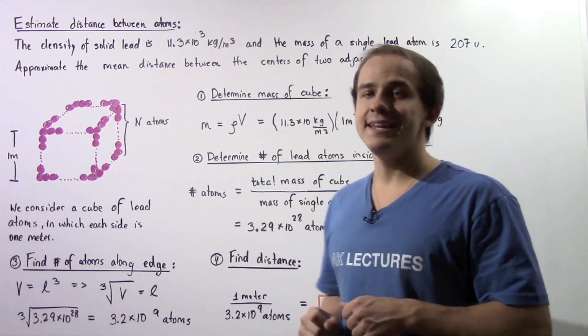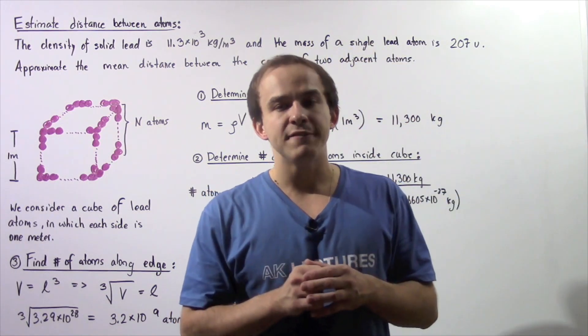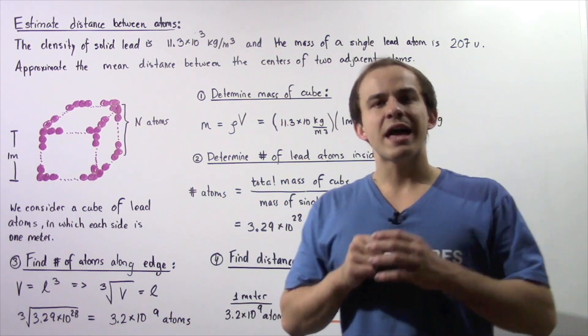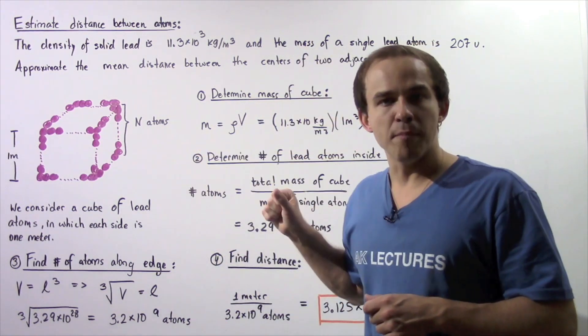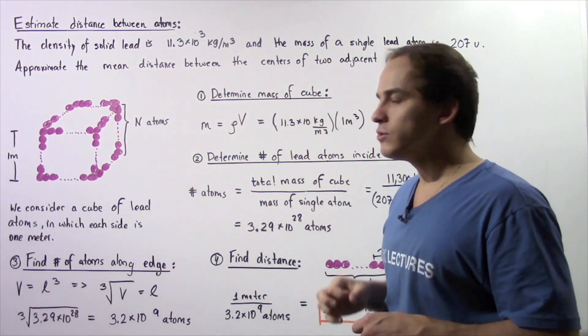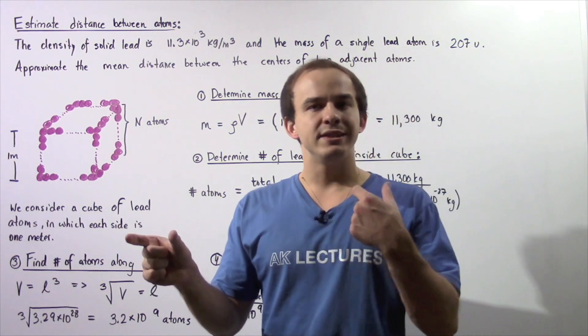Recall that density is equal to mass divided by volume. So if we take that equation and rearrange it, we can solve for m our mass.